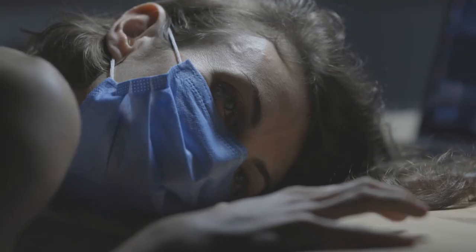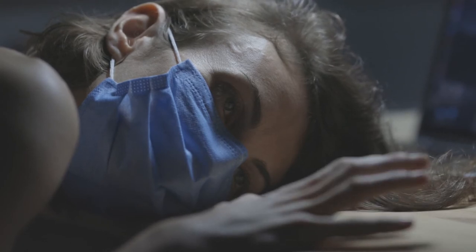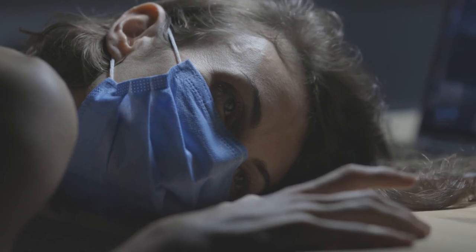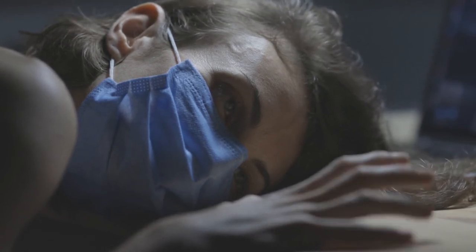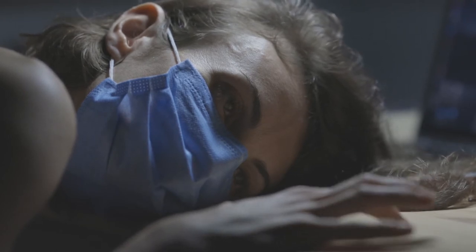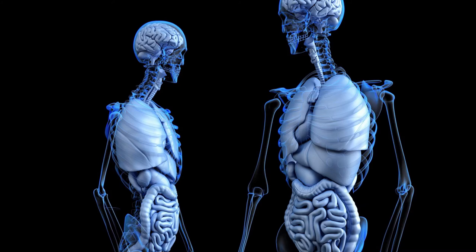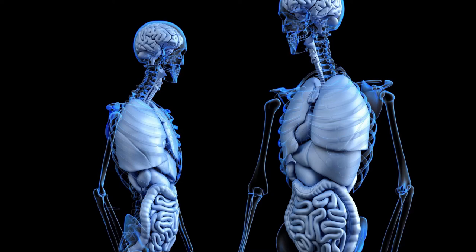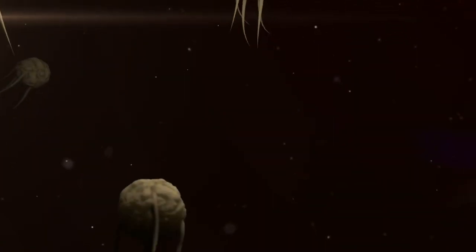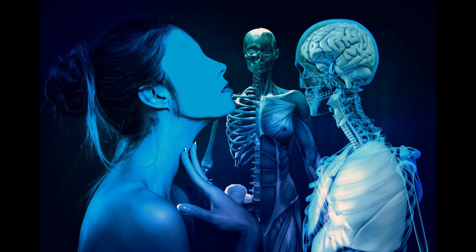Now, a host, like we saw from our first lecture, is an organism that provides nourishment and shelter to the parasite. You have different types of hosts. You have what you call a definitive host. A definitive host is that host that harbors the reproductive form of the parasite — it is the host in which sexual reproduction takes place, or it harbors the most highly developed form of the parasite. Where these things are not clear, just know that the definitive host is the mammalian host.